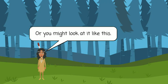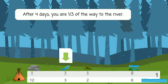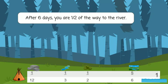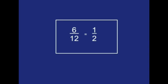Or you might look at it like this. After four days, you are one-third of the way to the river. Four-twelfths equals one-third. After six days, you are halfway to the river. Six-twelfths equals one-half.